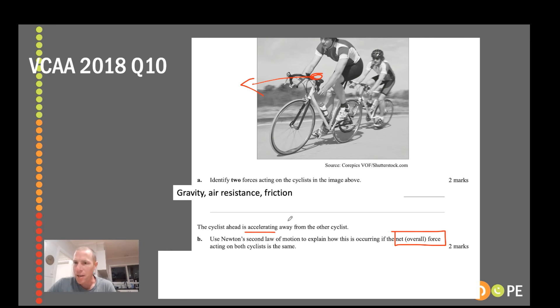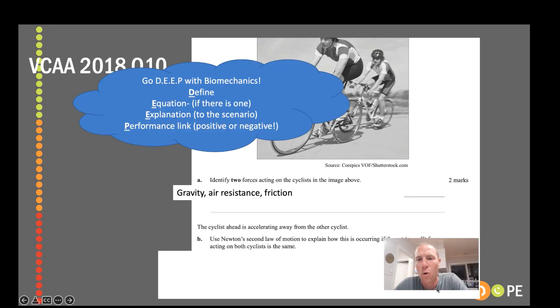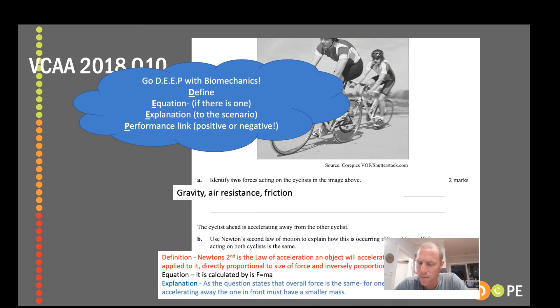This is the same thing happening: both of these guys are applying the same force, this guy is going faster as told to you by VCAR, he must have a lighter mass. The way we think that you should tackle all biomechanics questions is to go DEEP with your answers. D for define: in this case it's Newton's second law, and this is the definition we've been talking about. Secondly, if there is an equation, which a lot of these concepts have, use it. In this case it's F equals MA, force equals mass times acceleration.